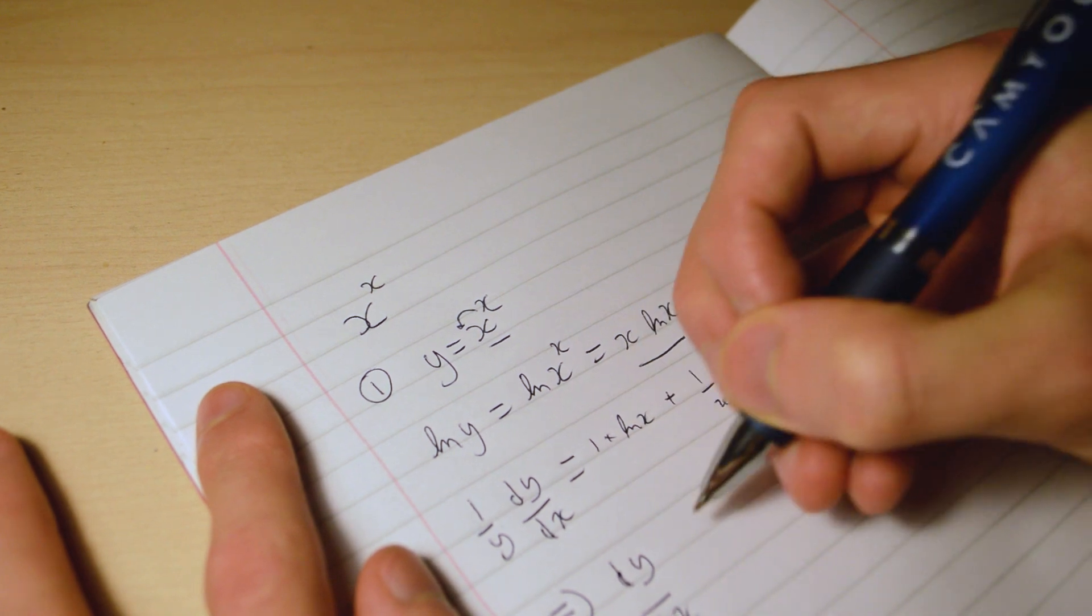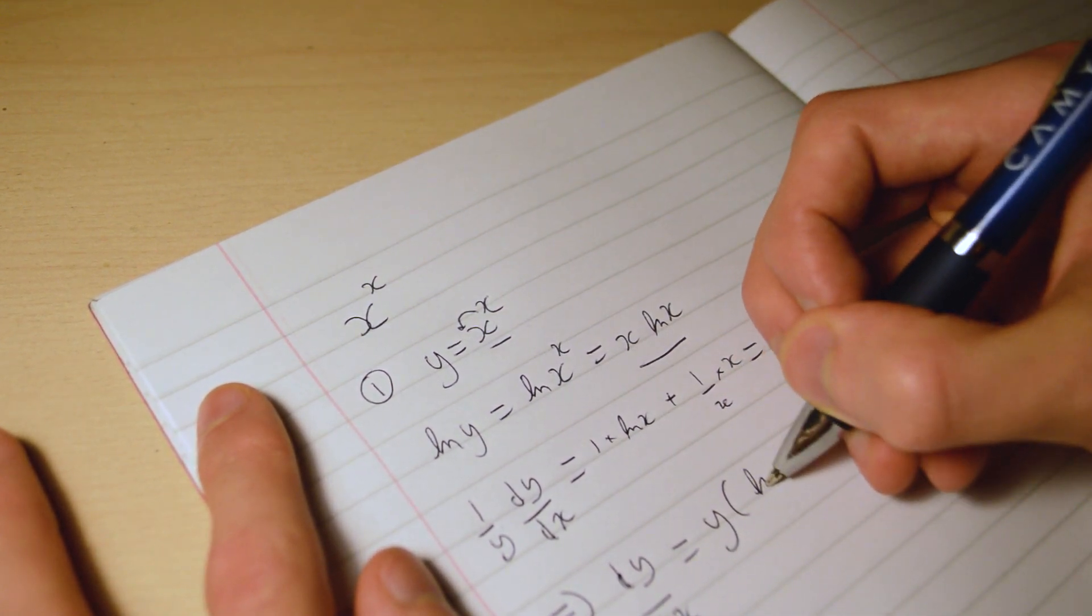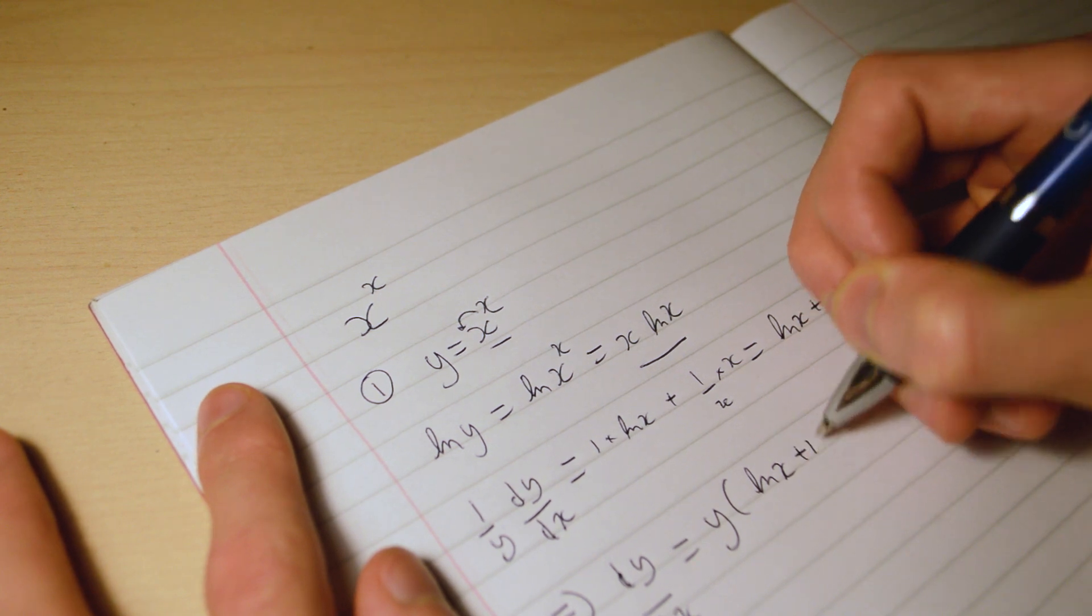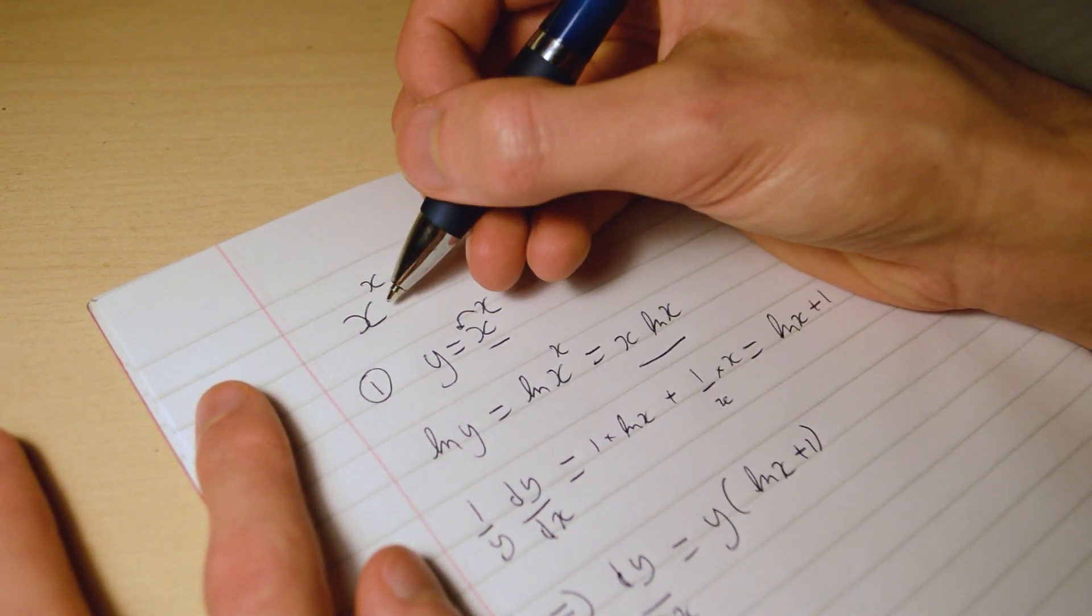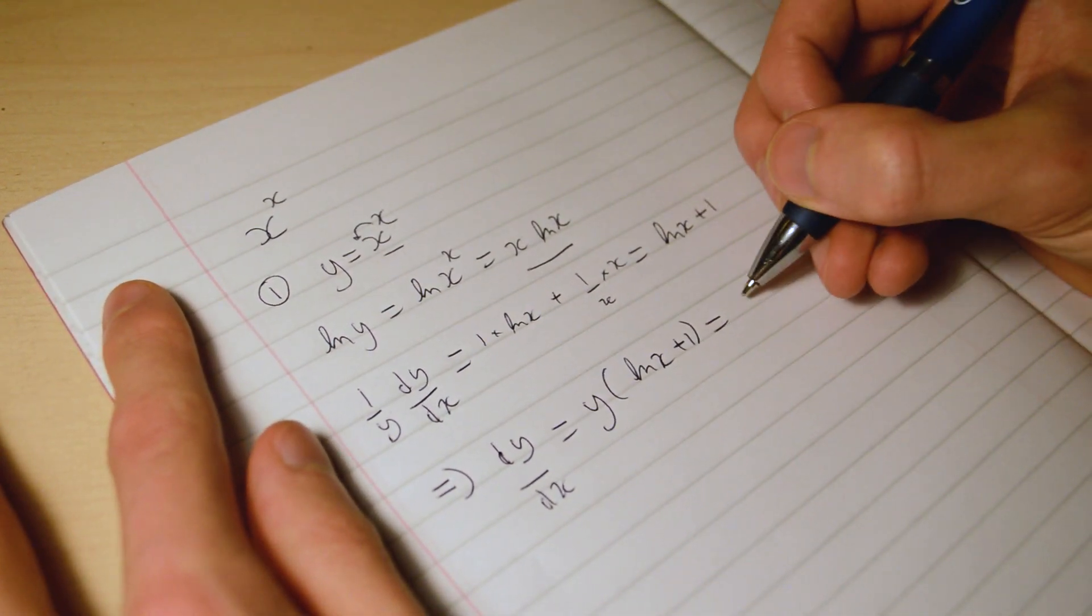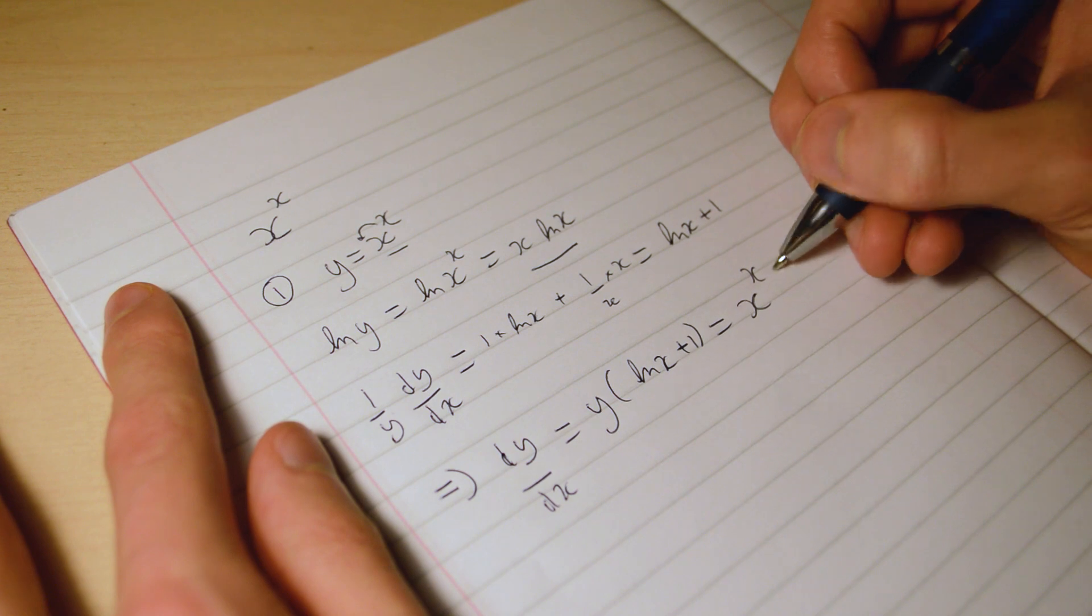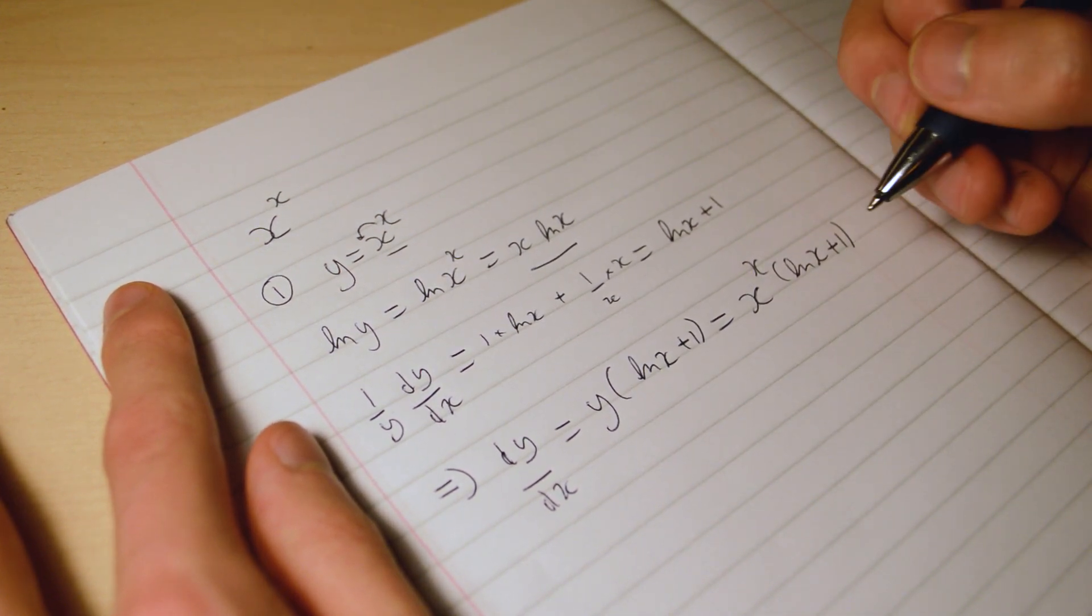dy/dx is equal to y times (log x plus 1). And we know what y is - y is equal to x to the power of x - so that is simply equal to x to the x times (log x plus 1), which is the answer.